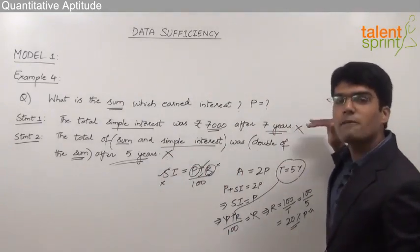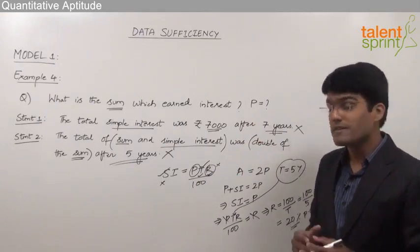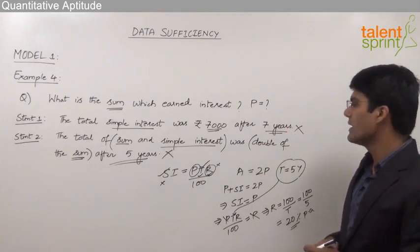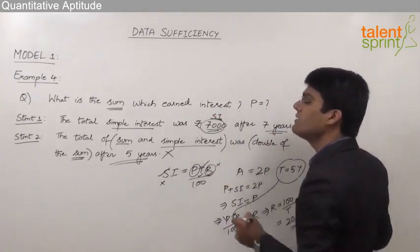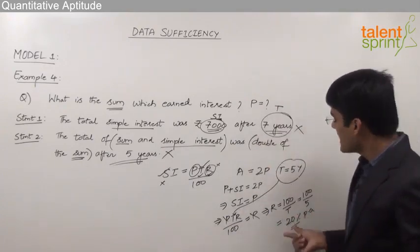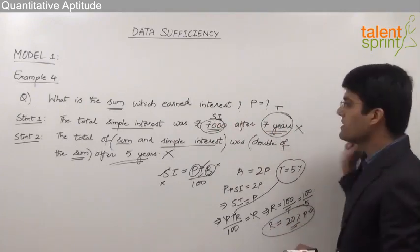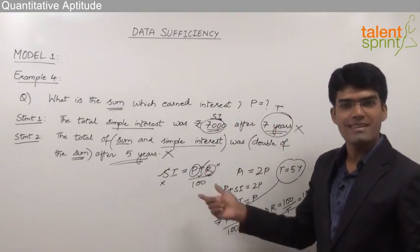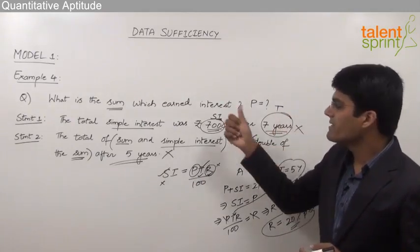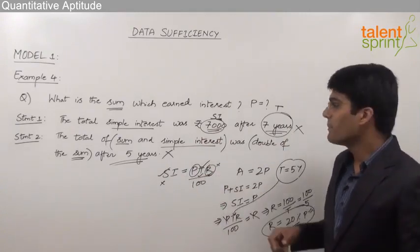In Statement 1, the rate of interest R is not mentioned, and in Statement 2, the simple interest SI is not mentioned — that is why individually they fail to answer the question. If we combine both statements: from Statement 1, SI = 7000 with time period T = 7 years; from Statement 2, R = 20% per annum. Together we know SI, T, and R, so we can find the principal P using SI = PTR/100.